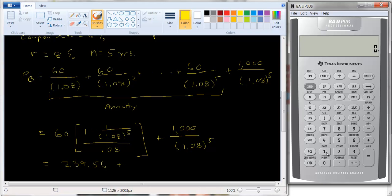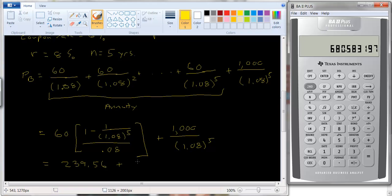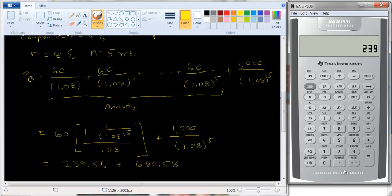So let's see, we get 1.08 raised to the 5th power. Again, flip it over, multiply it by 1,000, and we get $680.58. And let's just add those two together, plus the $239.56, and we get $920.14.